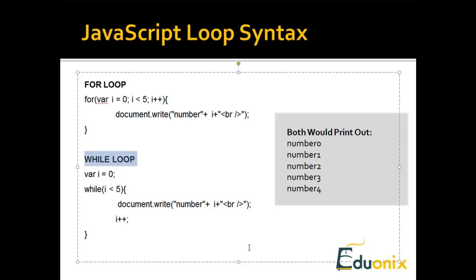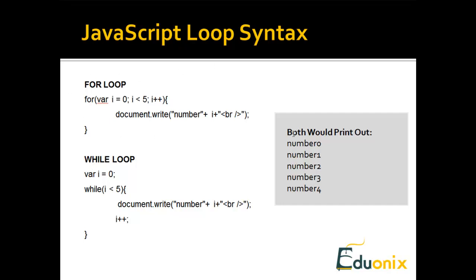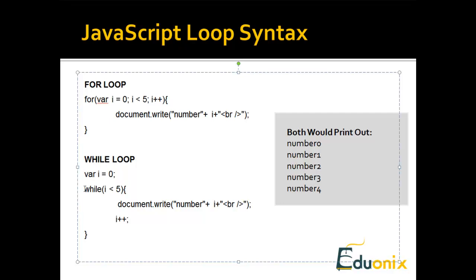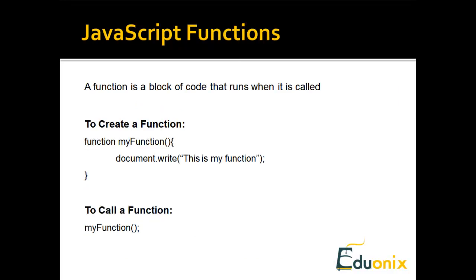The while loop syntax does the same thing — it prints out numbers zero to four. We set the variable i to zero, then say 'while i is less than five' — while that condition holds, print it out and then increment by one. The first iteration i equals zero, it increments to one, still less than five, goes through again — two, three, four — and when it would hit five the loop stops. Again if you want to include five you can say less than or equal to five.